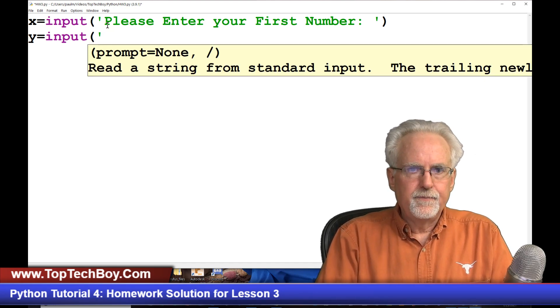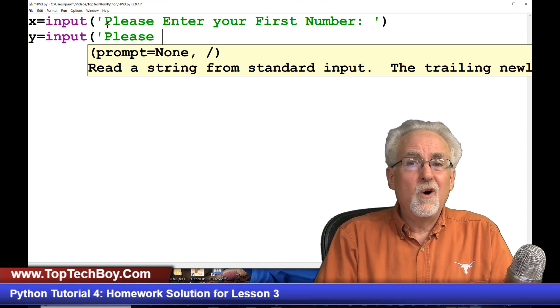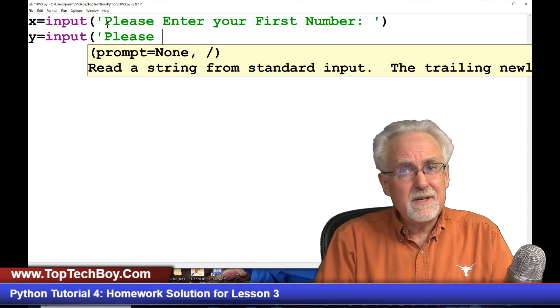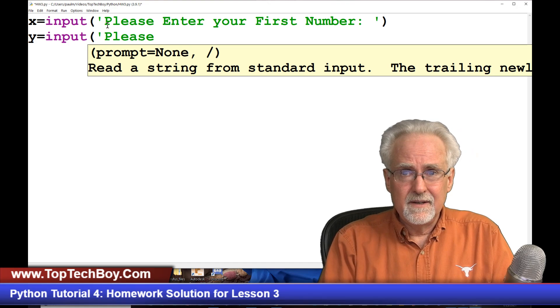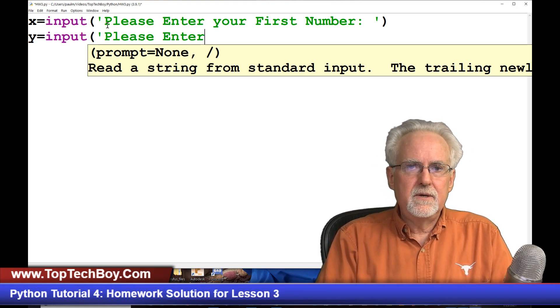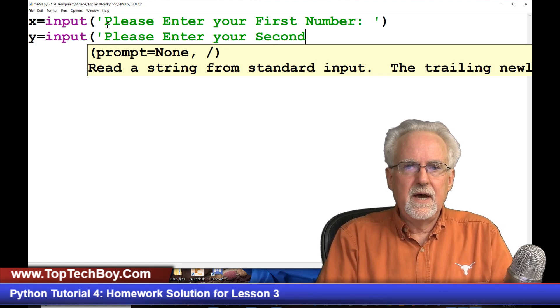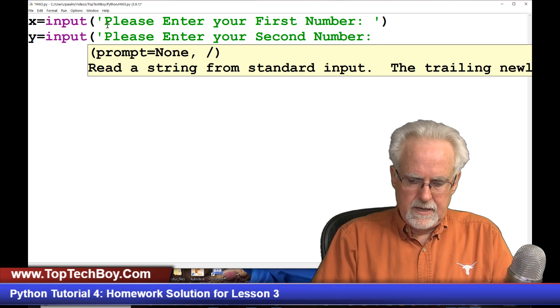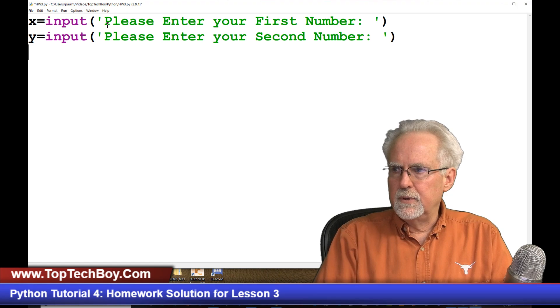Then we'll say Y is equal to input. And then we will say, please, please always be polite in these things. Say please. We're a polite society. At least we should be. So always say please, please enter your second number, put your colon, put your space, close the string, and then close the input.